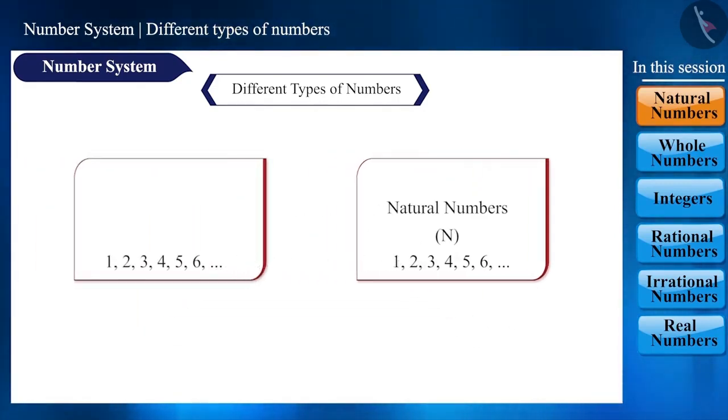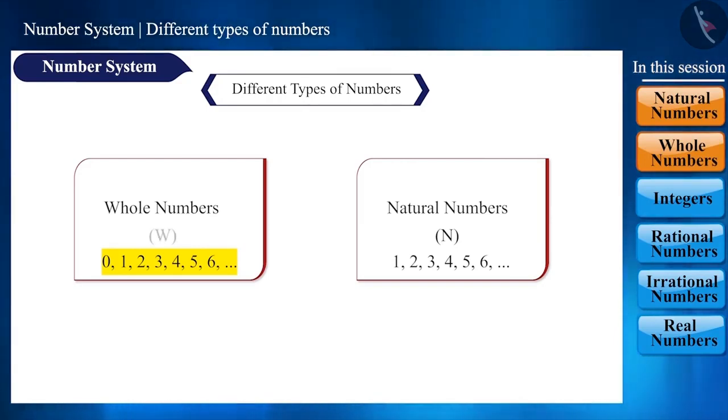Now, if we add the number 0, this series will be called whole numbers, which are 0, 1, 2, 3, 4, 5, 6, etc. These are indicated by the symbol W.